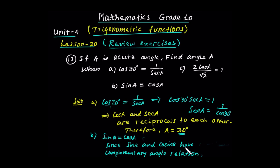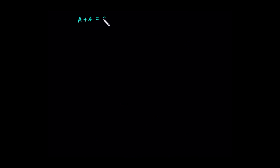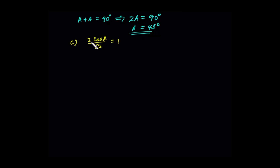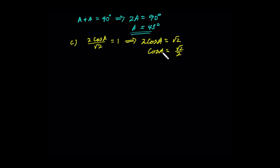Since sin and cos have a complementary angle relation, A plus A must be equal to 90 degrees. This implies that 2A is equal to 90 degrees, so A is equal to 45 degrees. This is the answer. For part (c), 2 cos A over root 2 equals 1, and the value of A is 45 degrees, since cos A equals sin A at 45 degrees.